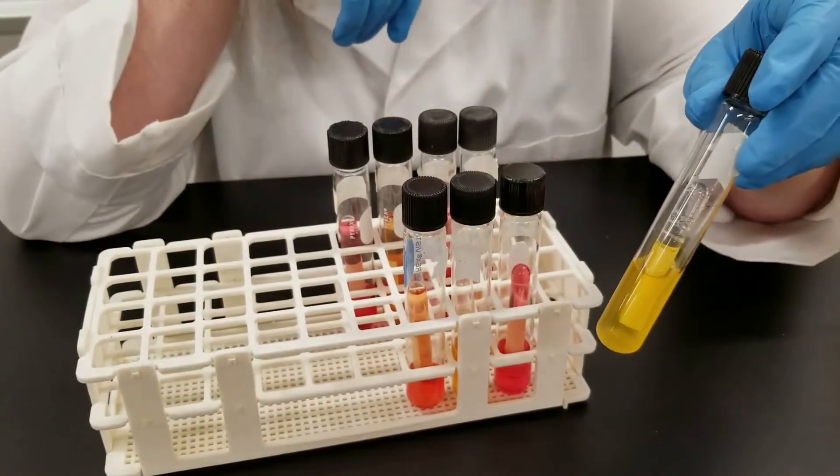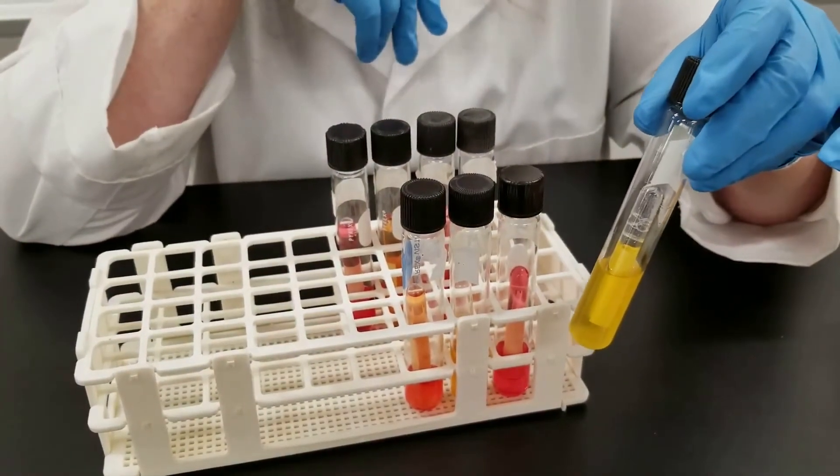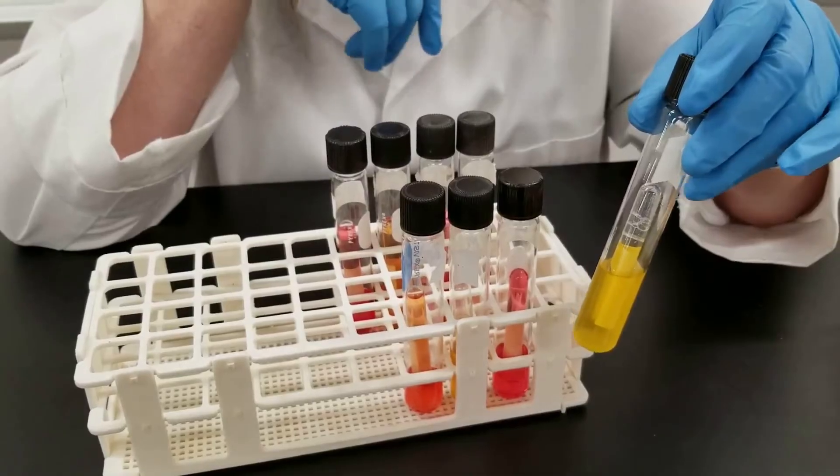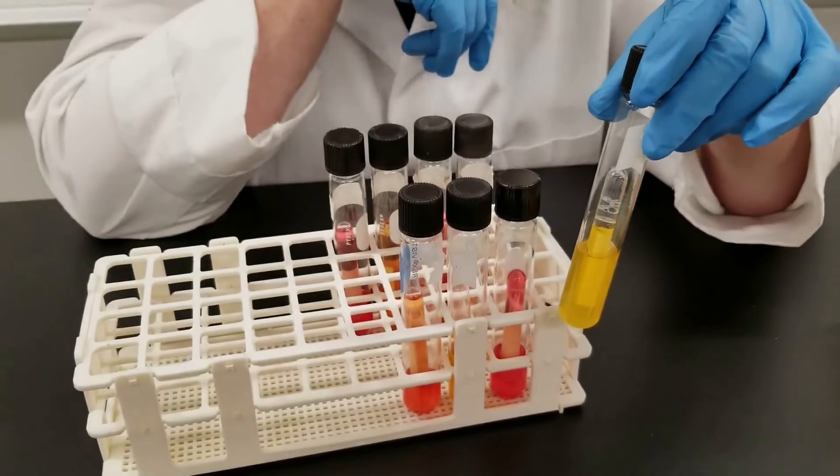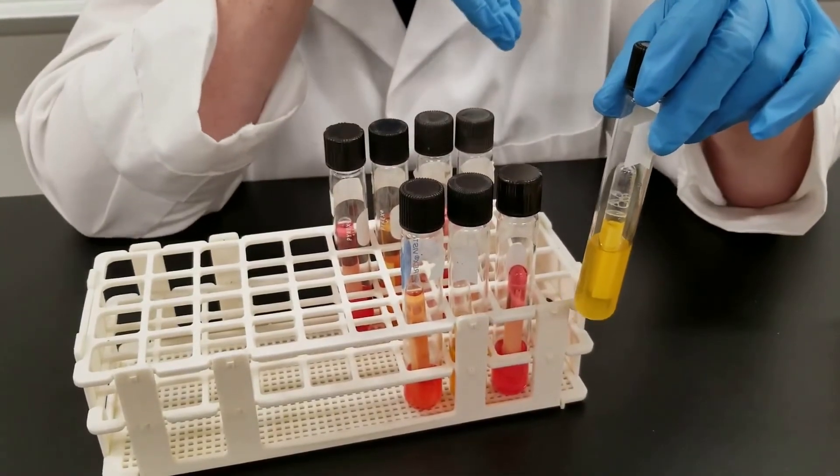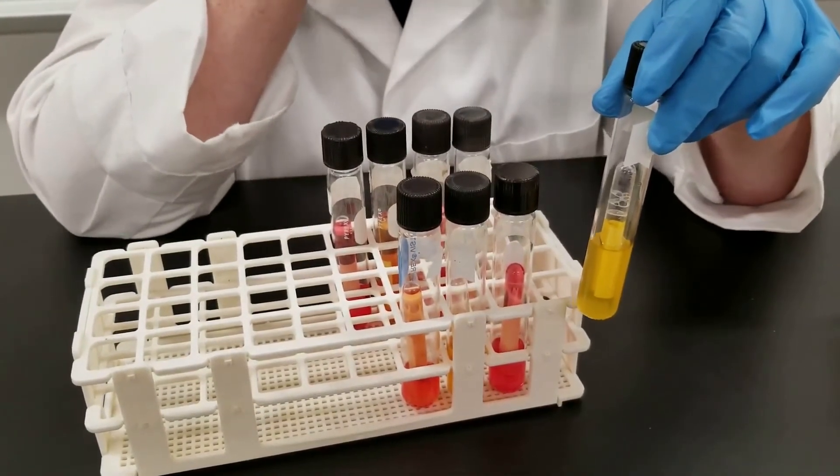In this tube, you can definitely tell, obviously it has turned yellow. That would be positive for acid. And then if you look at the inverted tube, you can see there's an air bubble in there. So that is positive for gas. So you would record that as AG or acid and gas.